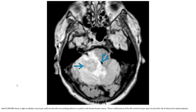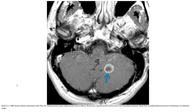On axial FLAIR, a right cerebral mass indicated by the solid arrow with surrounding edema is seen in a patient with known breast cancer. There is a rim-enhancing pattern with deep white matter involvement. Axial T1C+ also demonstrates a solitary ring-enhancing metastasis with no edema. Supratentorial lesions were also found. Resection revealed adenocarcinoma metastasis.